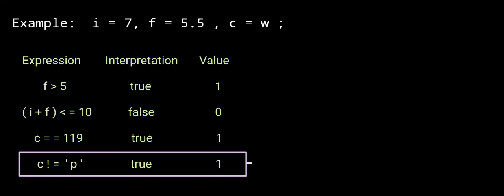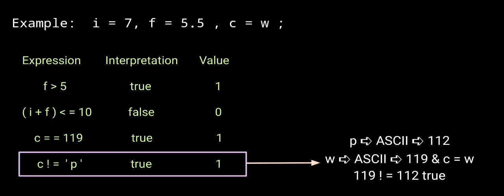Next expression: c not equal to 'b'. c is the character variable with value 'w', which has ASCII value 119. The ASCII value of 'b' is 98. So 119 not equal to 98 — condition is true. Interpretation is true, value 1.